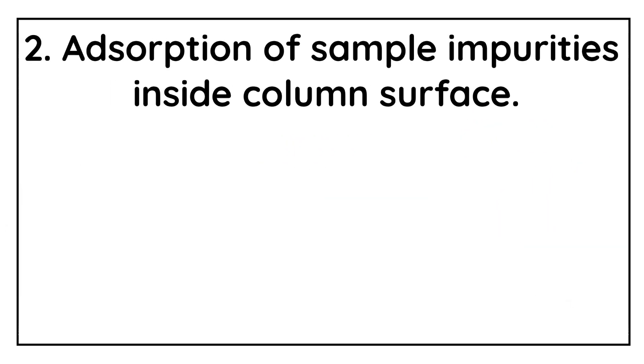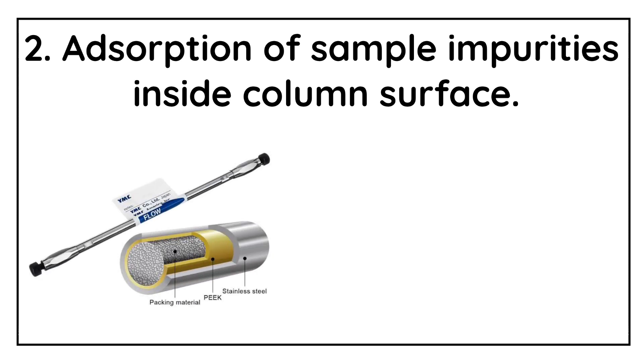Adsorption of the sample impurities or the contaminants inside the column surface. Column performance or the column life often reduce significantly due to buildup of the strongly retained sample impurities inside the column surface. Generally, during the analysis of complex sample molecules, this type of issues are seen. And whenever there is a buildup of the strongly retained impurities inside the column surface, then peak broadening and the peak tailing is seen.